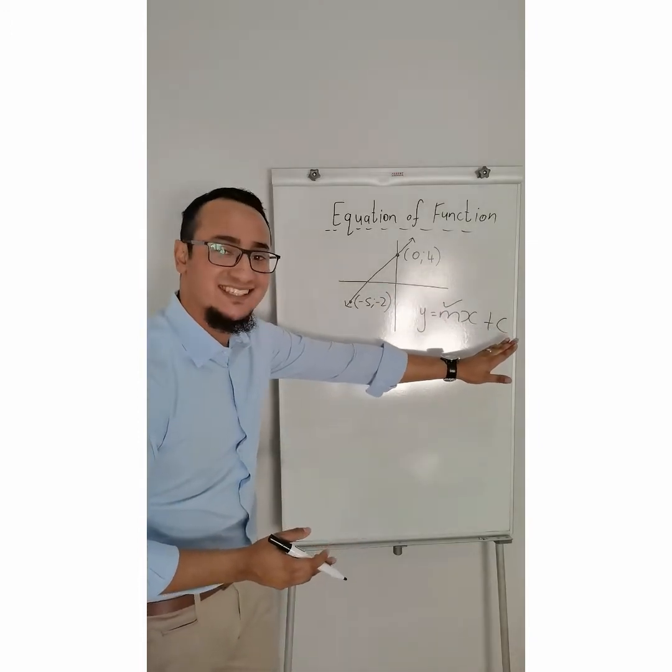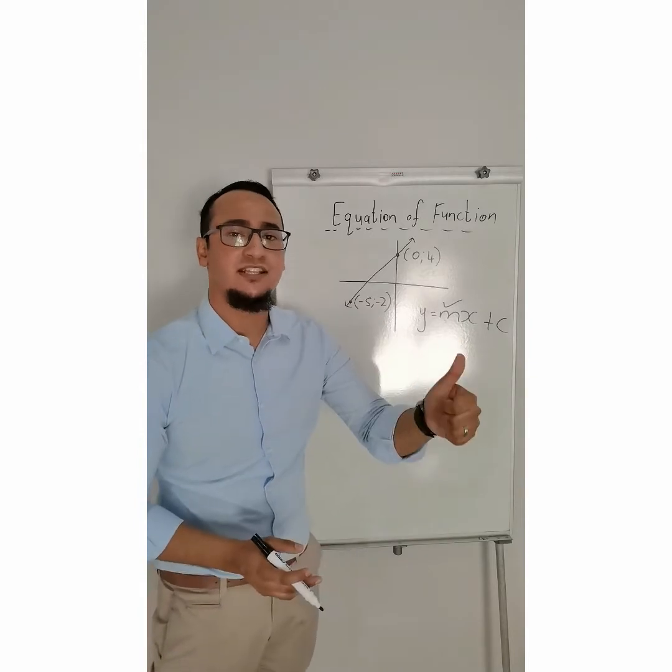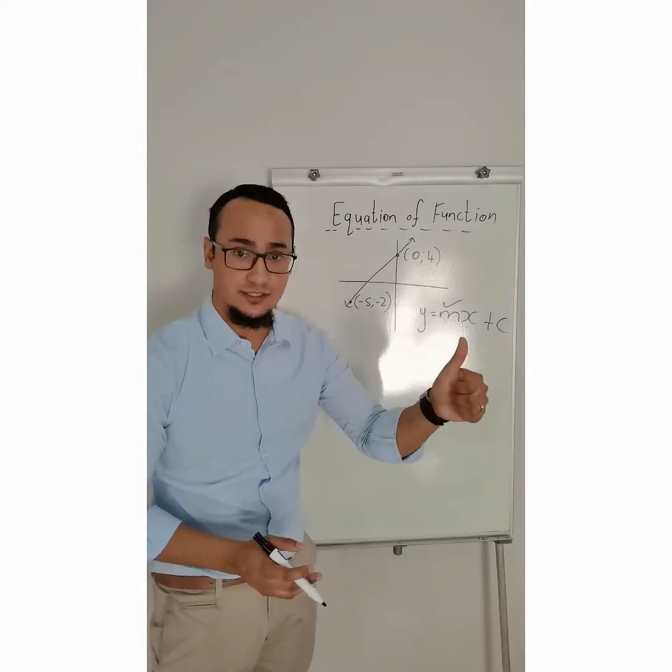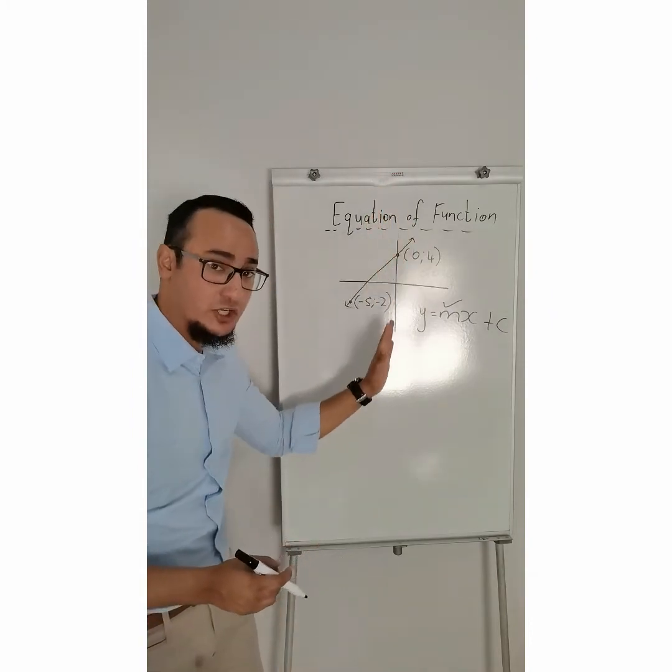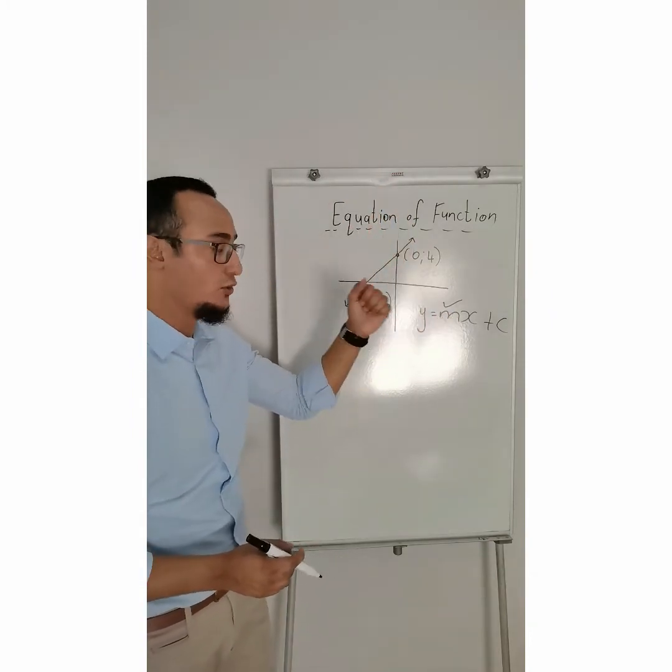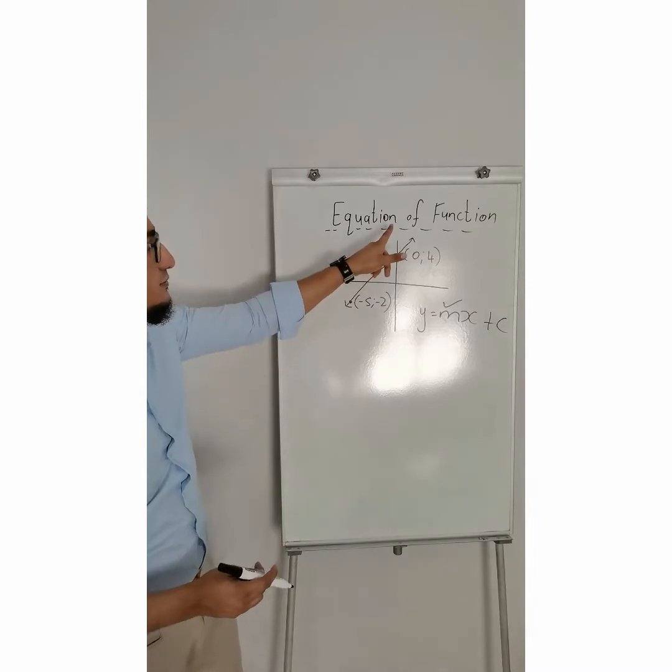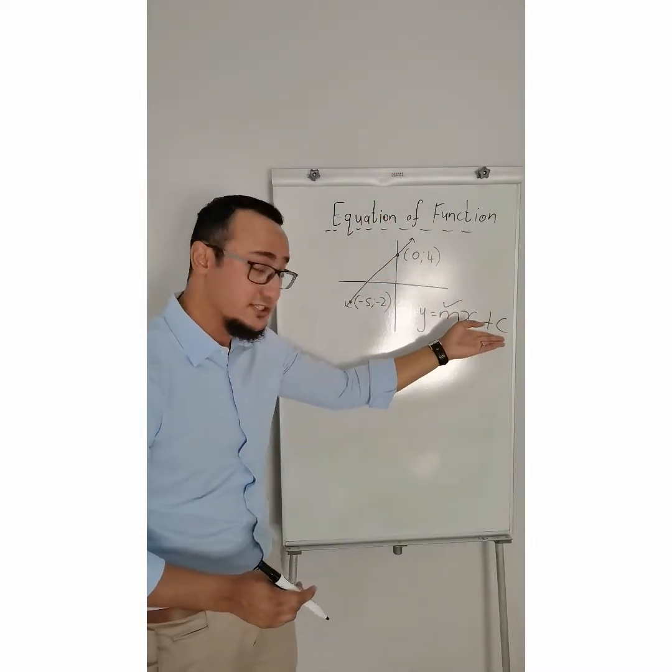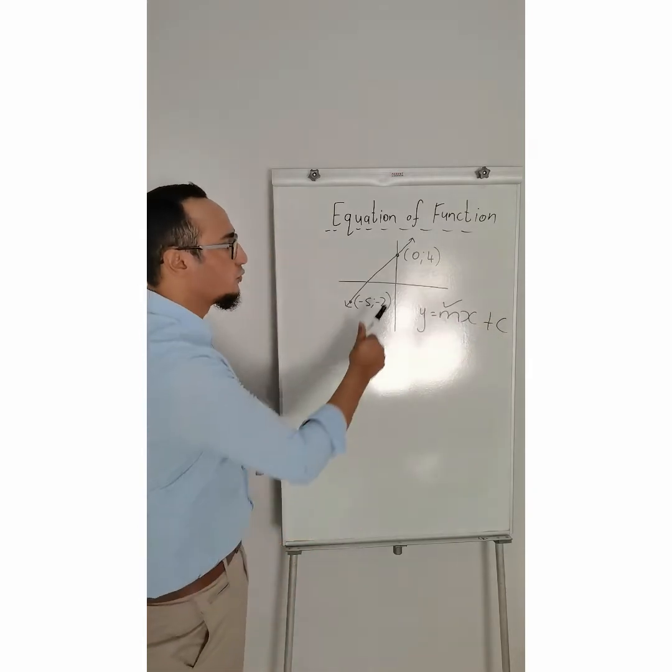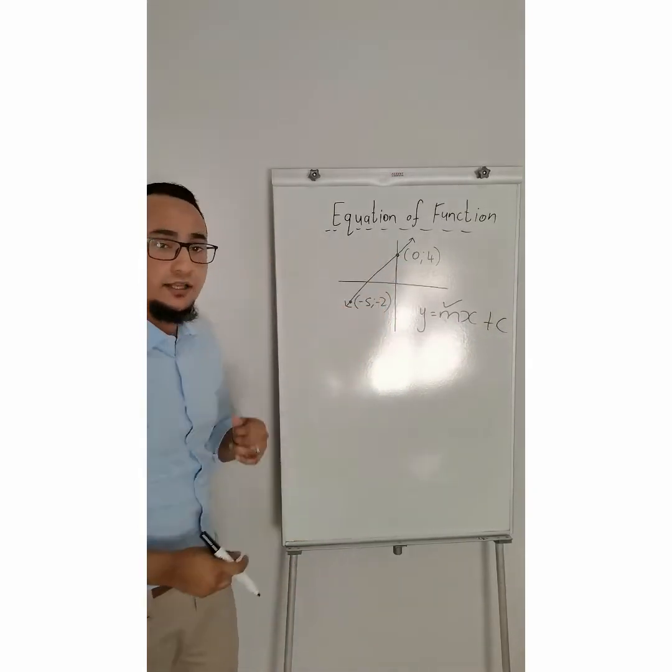The next thing is, what does c represent? c represents my y-intercept. What does an intercept mean? Remember, when my graph, or my line, or my function, touches my y-axis, or x-axis. In this case, it's a y-intercept, meaning where does it touch my y-axis?